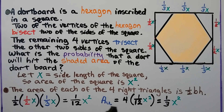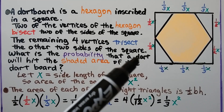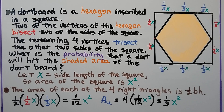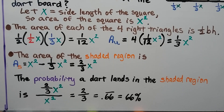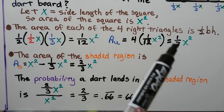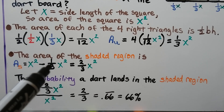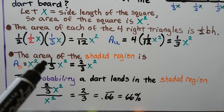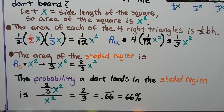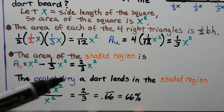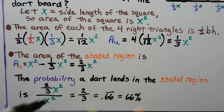For the area of the unshaded portion, we have four such triangles, so 4 times one-twelfth x squared, giving us one-third x squared. The area of the shaded portion is x squared minus one-third x squared, which equals two-thirds x squared. The probability a dart lands in the shaded region is two-thirds x squared over x squared. The x squared cancels, giving us two-thirds, or 0.66, or 66%.